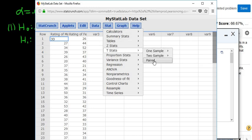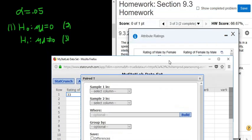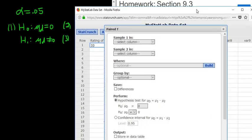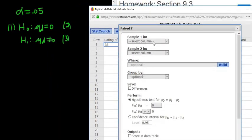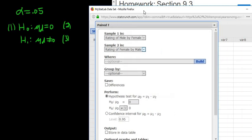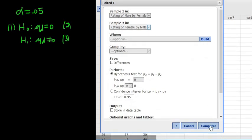You'll know it's paired whenever it says paired in the problem, whenever you have dependent data. So pick the males, pick the female, and then leave it at not equal to. Click Compute.